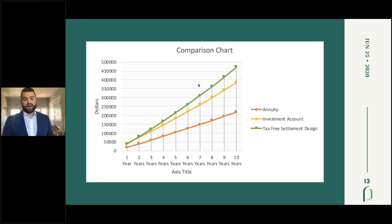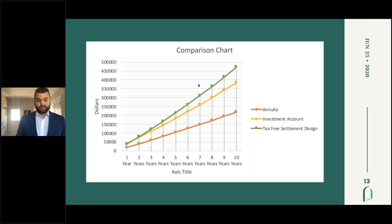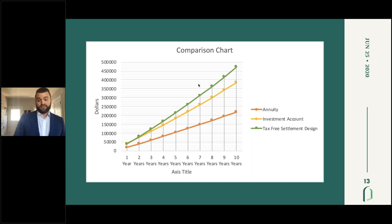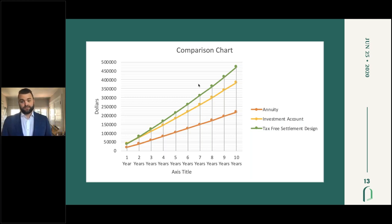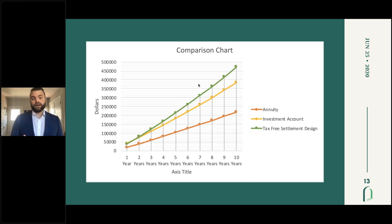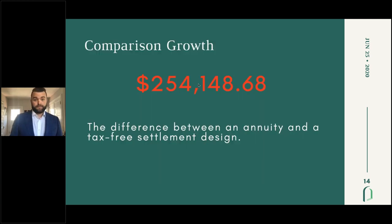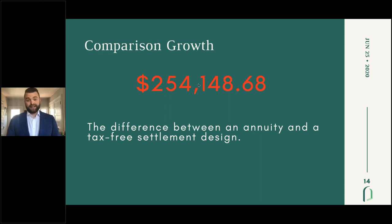For an annuity, the growth over a 10-year period with no withdrawals is going to be a little bit more than $200,000. For the same amount in a tax-free settlement design, it's going to be upwards of $450,000. So if we're doing all in one or the other, this is what it would look like after 10 years of growth with no withdrawals. When we compare that growth, the difference between an annuity and a tax-free settlement design is going to be more than a quarter million dollars.